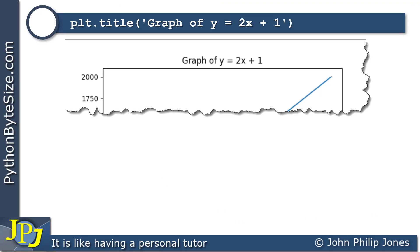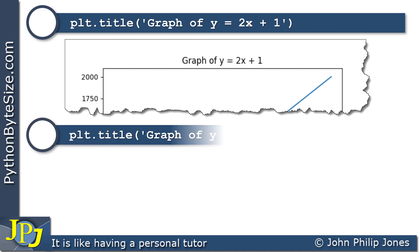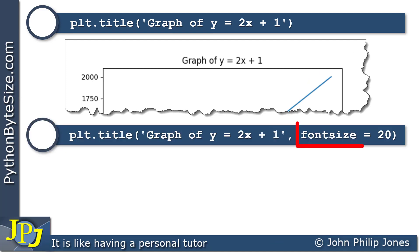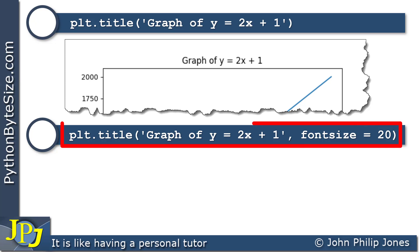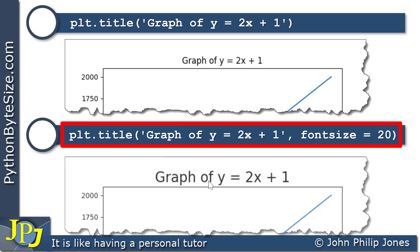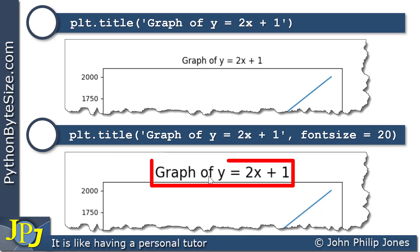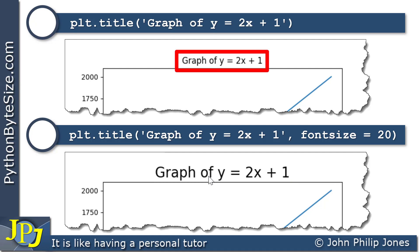Let's have a look at passing in another argument to title. You can see here I've made the font size equal to 20. When the program executes with this program statement, what you will expect to see is this, and if you look here, you can see that the size of the font is bigger than it was previously, which would have been the default size for the font when using title.